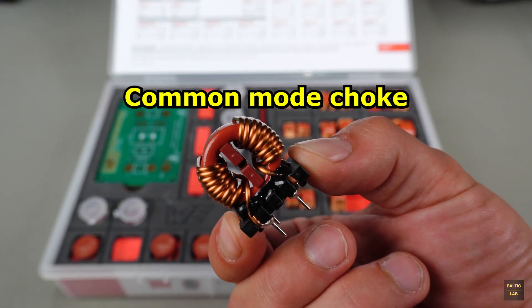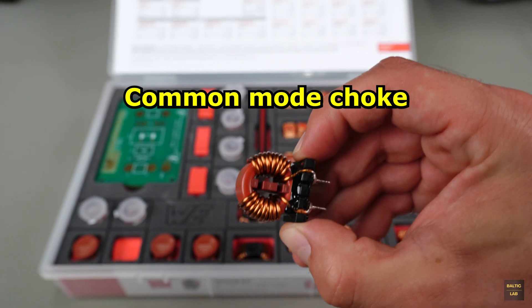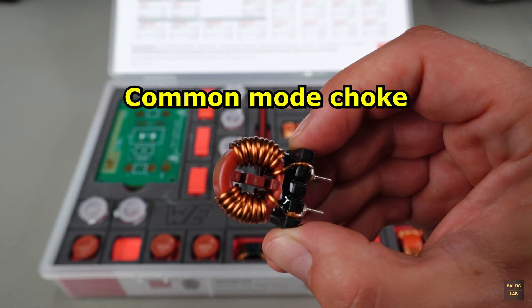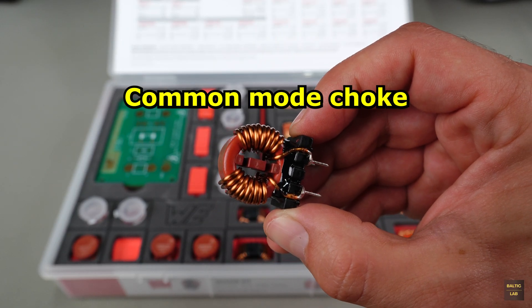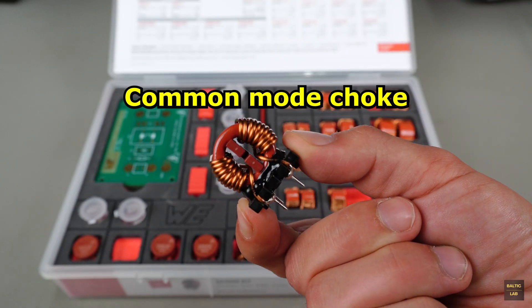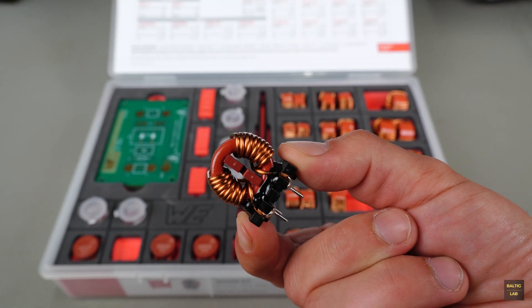These chokes consist of two symmetrically wound coils on a shared core. For signals that appear identically and in phase on both lines, like common mode interference, they present a high impedance. For differential signals, the magnetic fields cancel each other out and the choke becomes virtually invisible. At least in theory, but we'll get to that.